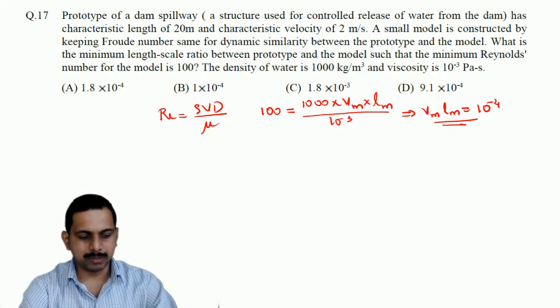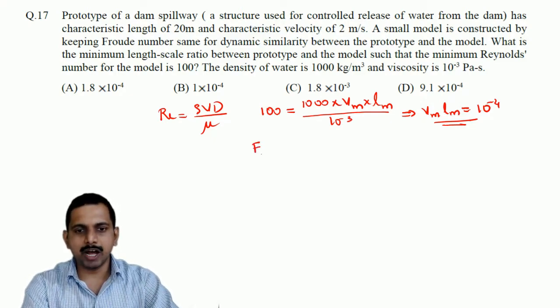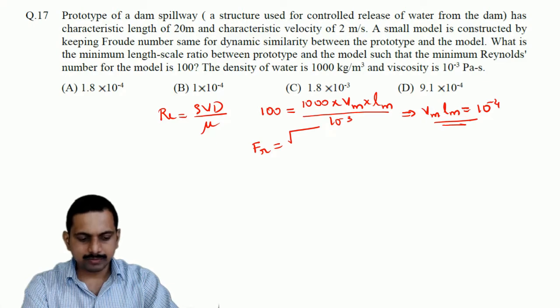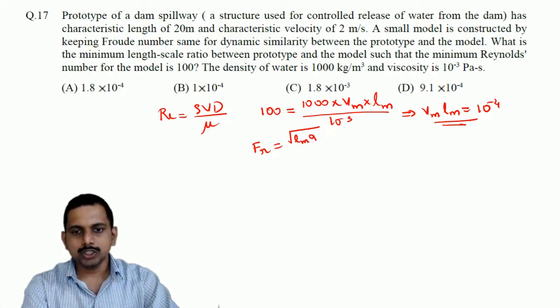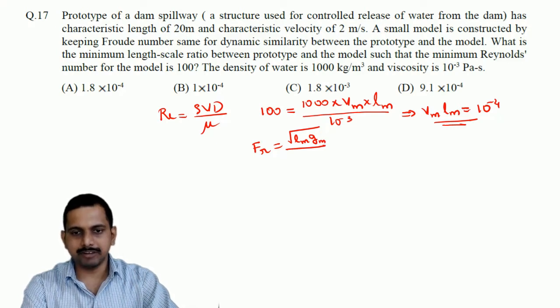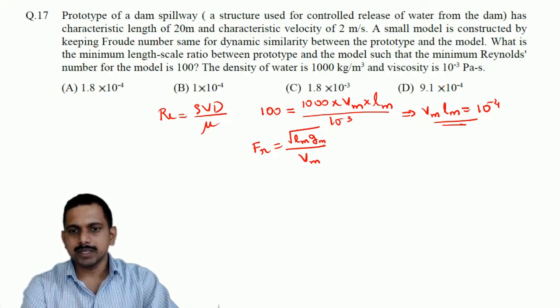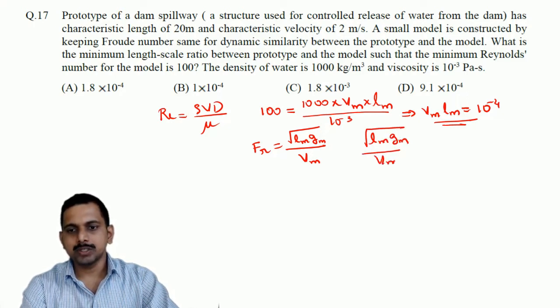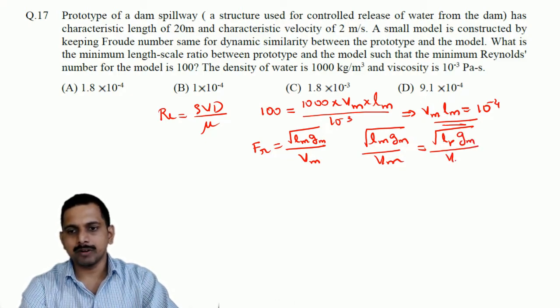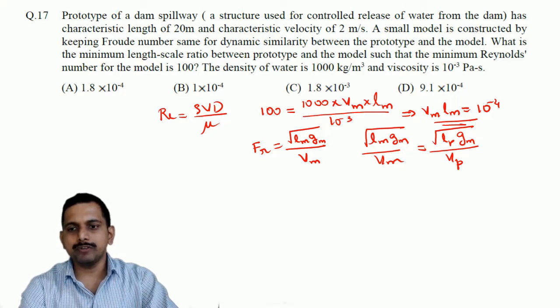Now, we will go with the Froude's number. Froude number Fr is equal to square root of L M G M, that is the gravity, divided by V M. So, now if I consider for the model and the prototype, then what happens? Square root of L M G M by V M should be equal to square root of L prototype, G prototype and V of the prototype. Here, G of the prototype and G of the model is the same, so it gets cancelled.